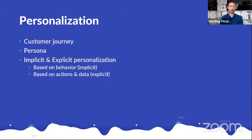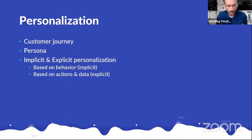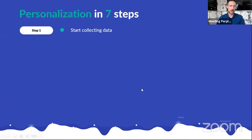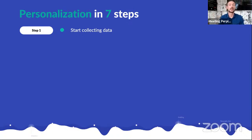But that's not what we're here for today — we're here for personalization. We've released a few versions of U-Marketing Suite building up to this personalization release. We're going to talk about customer journeys and personas, and explain the difference between implicit and explicit personalization — where implicit is based on behavior, and explicit is based on data we have or actions people perform. We're going to do that in seven steps.